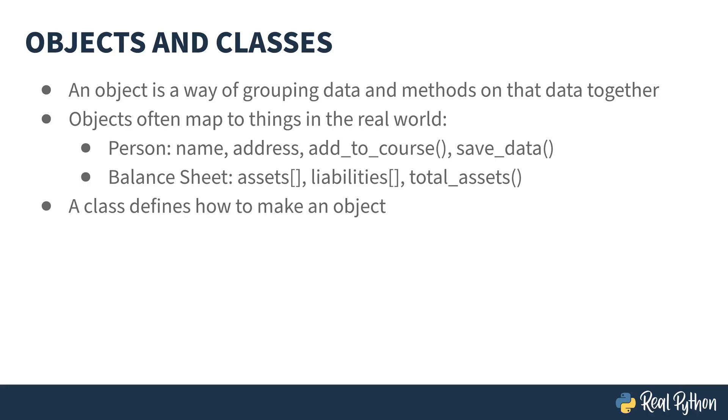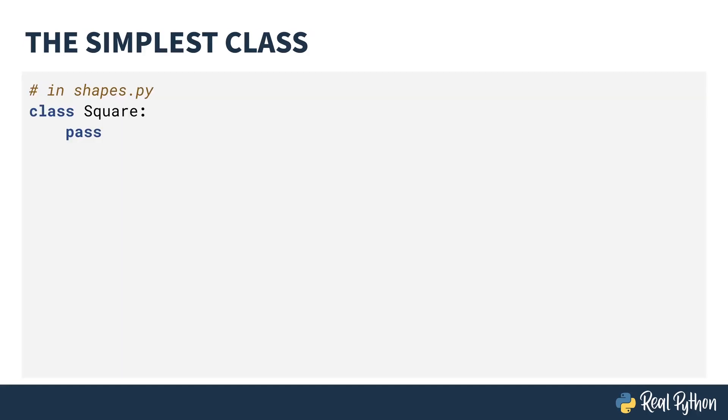A class defines how to make an object and is actually in Python how you create the object itself, which is called instantiation. I'm going to start with some examples that are based on geometric shapes. If you're coding along with me, I'm putting it inside of a file called shapes.py.